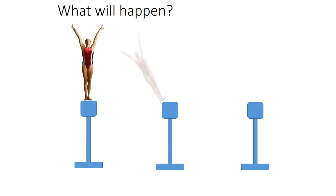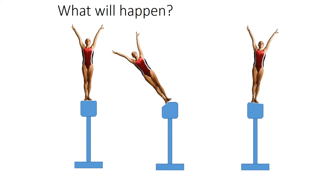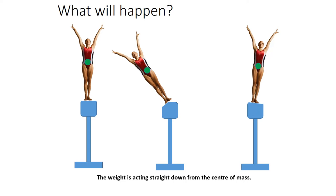Here we have three gymnasts, all in three different positions, and the centre of mass is shown with a green dot. The weight acts straight down through the centre of mass. The first gymnast will stay on the beam because her centre of mass is acting directly downwards over the beam. The second gymnast is going to fall because her centre of mass is over the side of the beam, so weight acts down through that point pulling her to the ground. The third gymnast's weight is acting through the edge of the beam, so she should stay on it.